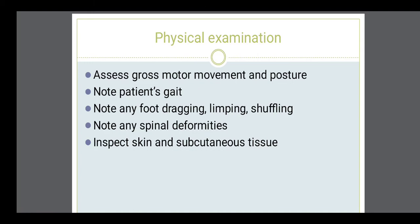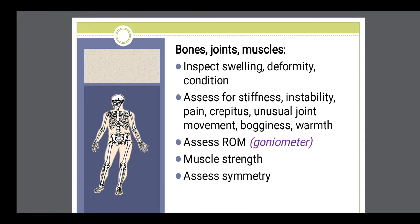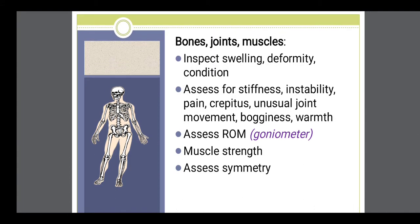Assess the gross motor movement and posture. See the patient's gait — how they are walking. Note any foot dragging, limping, or shuffling, any spinal deformity, and also examine the skin and subcutaneous tissues. Inspect the joints for swelling, deformity, stiffness, instability, pain, and crepitus — a sound heard when the joint is dislocated. Also assess range of motion and muscle strength.